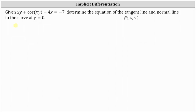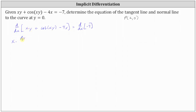Therefore we differentiate both sides of the implicit equation with respect to x. To differentiate x times y with respect to x, we will have to apply the product rule, where the first function is x and the second function is y. Applying the product rule, we have the first function x times the derivative of the second function with respect to x, which is dy/dx, plus the second function y times the derivative of the first function with respect to x, which is one.